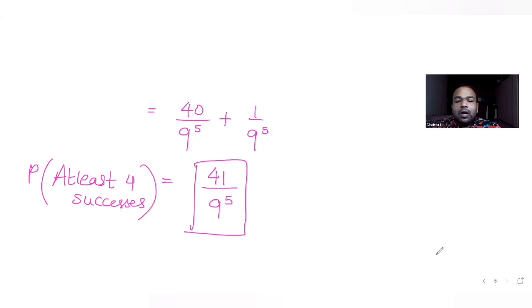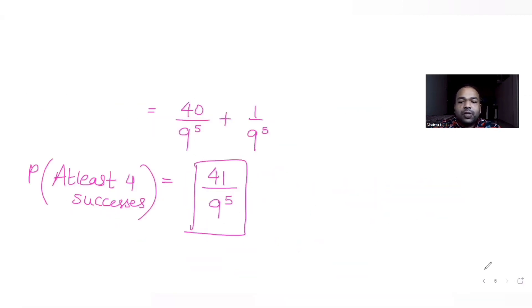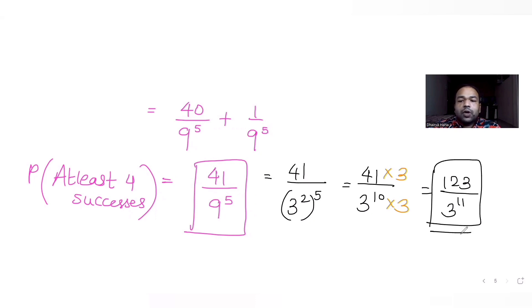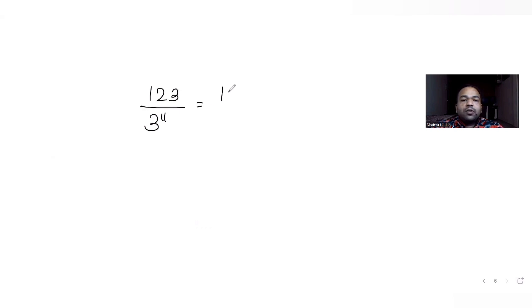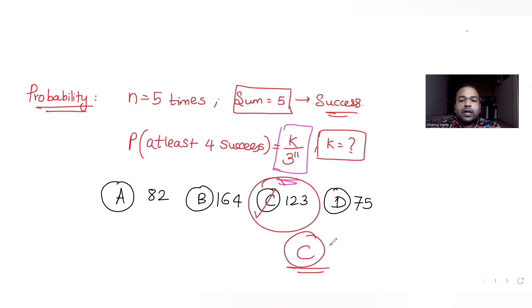Now the probability of at least 4 successes was given as K upon 3 raised to 11. I convert 41/9^5 by writing 9 as 3^2, so 9^5 = 3^10. Then multiplying numerator and denominator by 3 gives 123/3^11. Comparing with K/3^11, the value of K is 123. So the correct answer is option C.